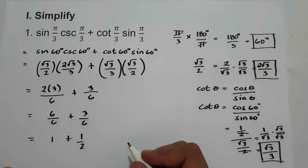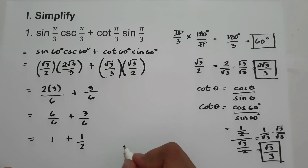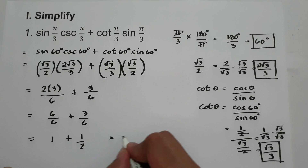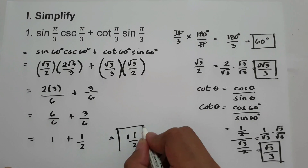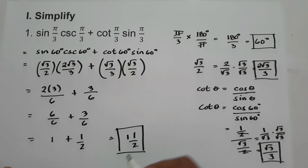Therefore, our answer is 1 and 1 half, which equals 3 over 2.